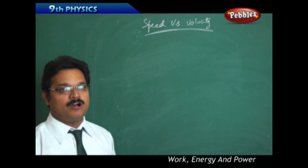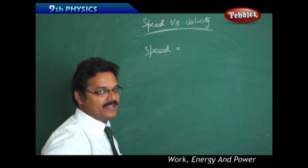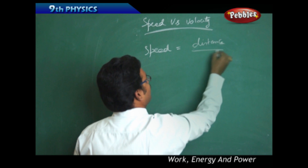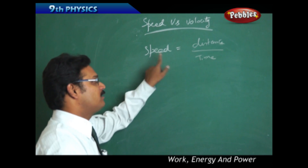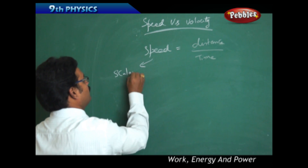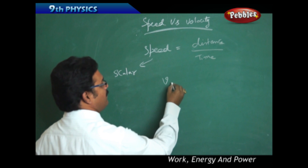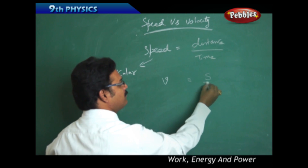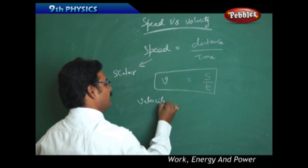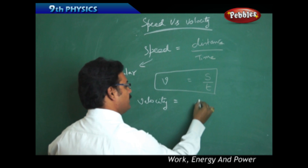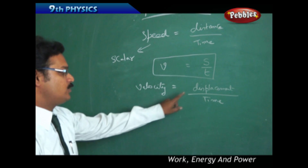Speed in physics is defined as distance by time. Distance is a scalar quantity, time is a scalar quantity, so speed is also a scalar quantity. It has only magnitude. If I represent speed with symbol V, distance with symbol S, and time with symbol T, then we get the formula V equals S by T.